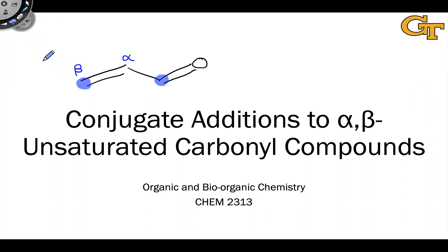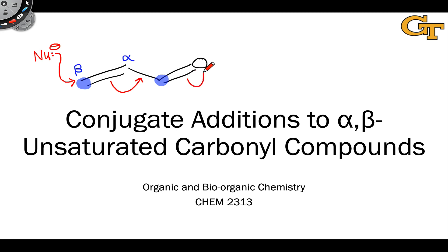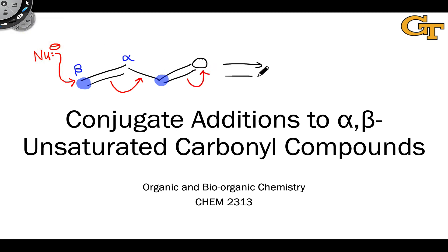Alpha-beta-unsaturated carbonyl compounds possess two electrophilic sites: the carbonyl carbon and the beta carbon, and resonance structures can illustrate this. What this means is that when nucleophiles react with these compounds, they can do so in two ways — they can either add to the carbonyl carbon, as we've seen before, or they can add to the beta carbon in a nucleophilic addition step, forming a new bond to the beta carbon while the carbonyl group remains intact.